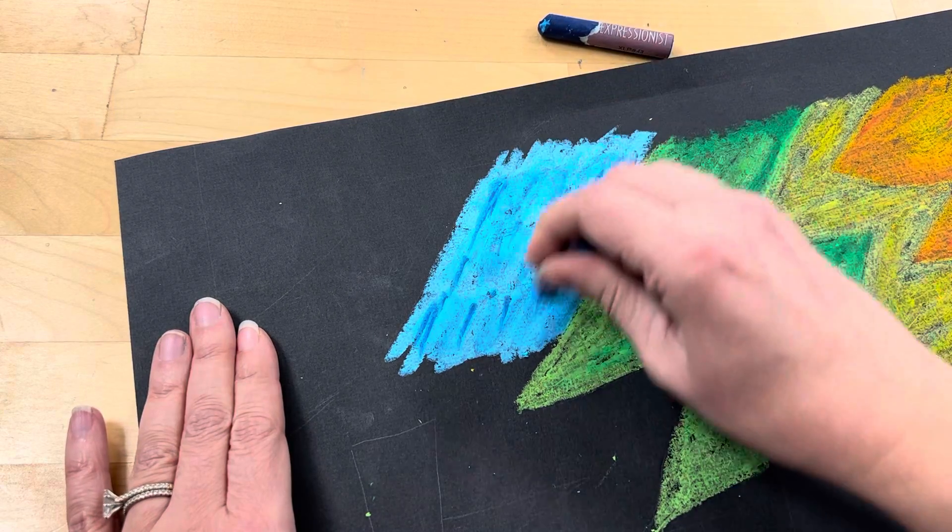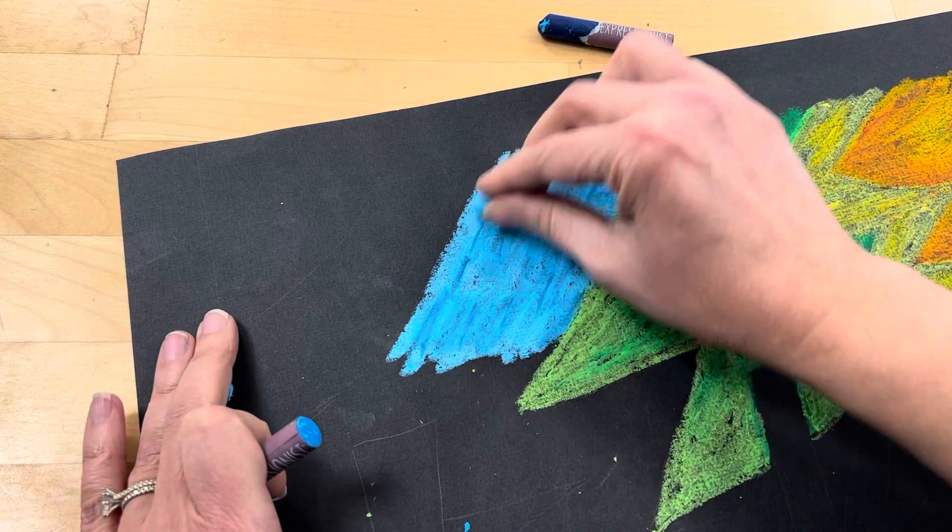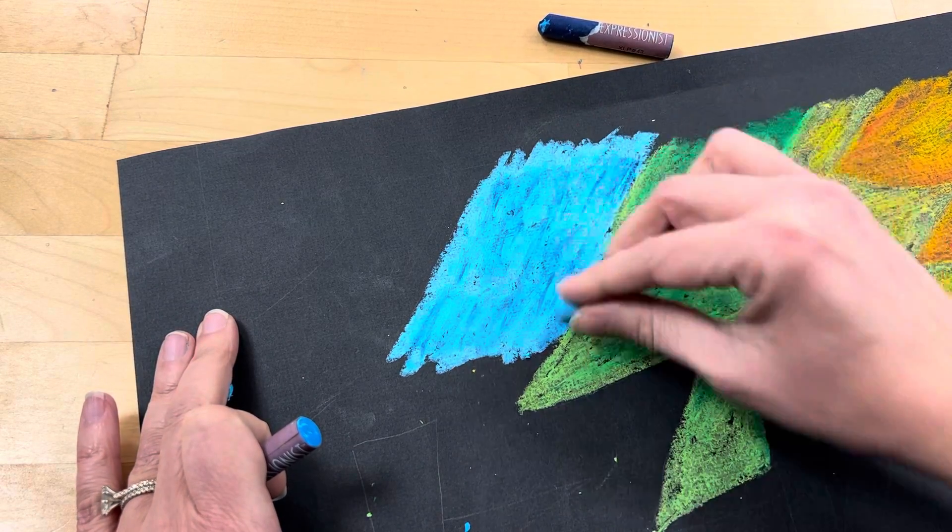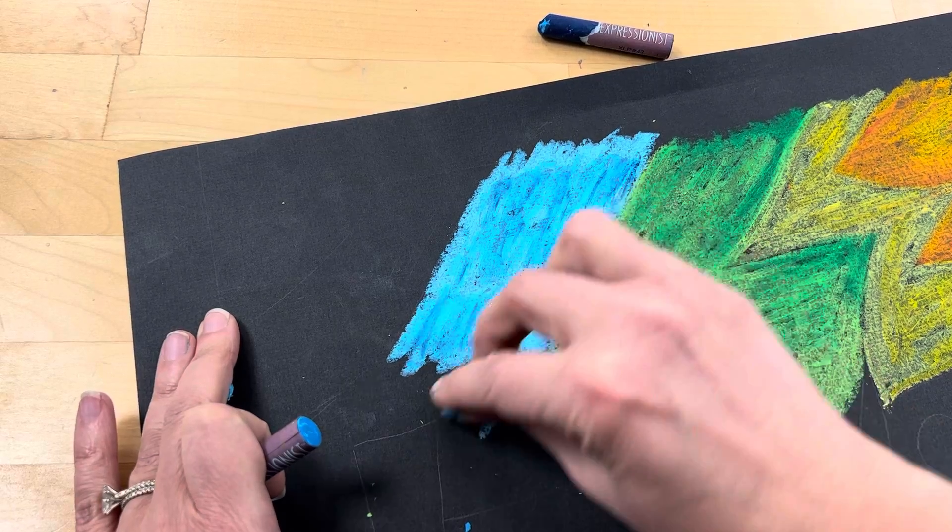And it's just creating a lot of depth, texture, interest. I can go back with my lighter color even and kind of get that there. So what I'm looking for is different variations of color within each area.